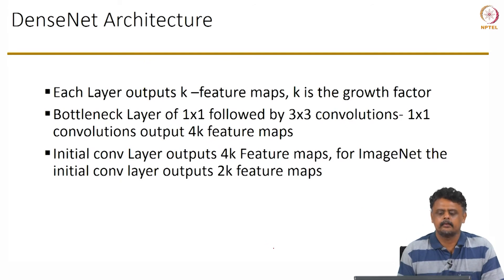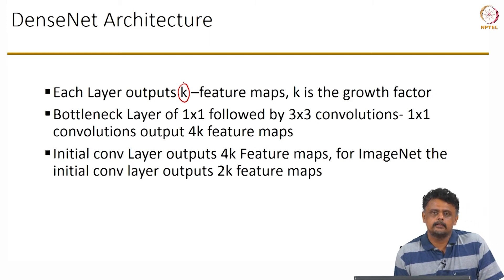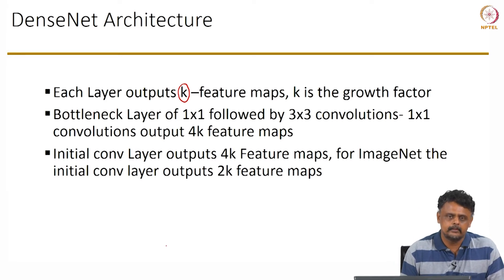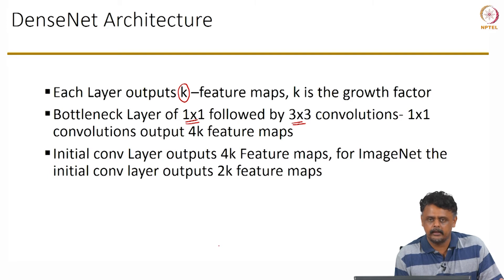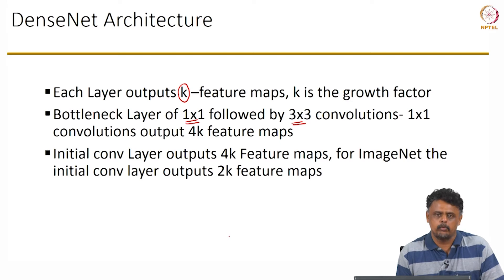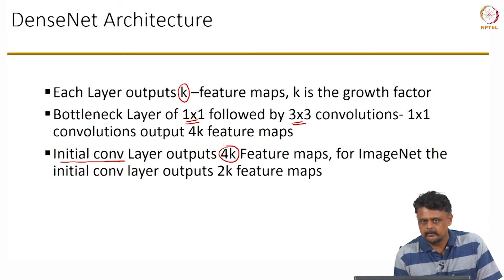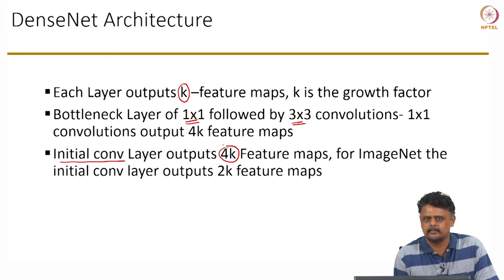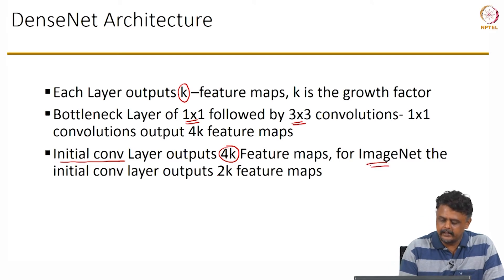Each layer outputs K feature maps, which is the growth factor. DenseNets also use the bottleneck concept seen in ResNet and Inception: a 1×1 convolution followed by a 3×3 convolution. Every 1×1 convolution outputs about 4K feature maps, which are then operated on by the 3×3 convolutions. Before input enters a dense block, an initial conv layer outputs about 4K feature maps. Typically networks designed for ImageNet as well as CIFAR have about 3 to 5 dense blocks with a growth factor ranging from 24 to 32.